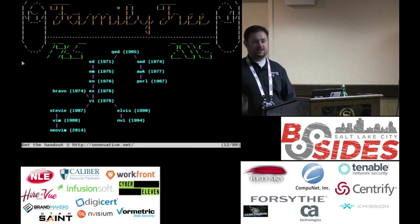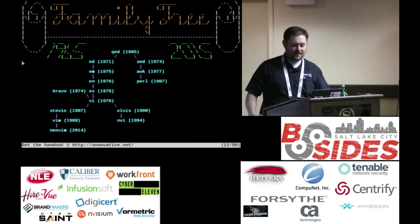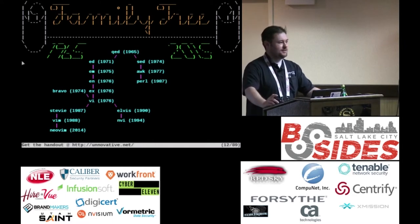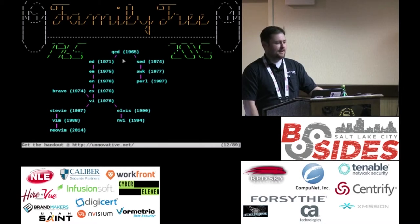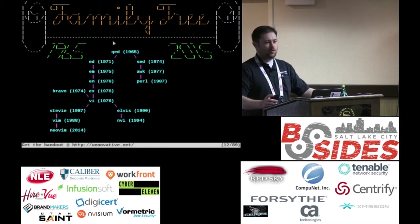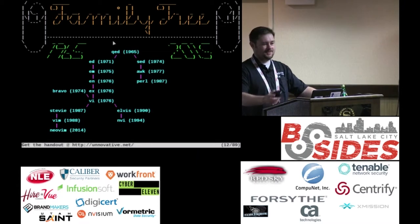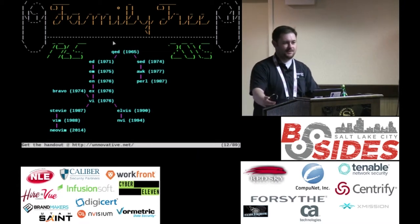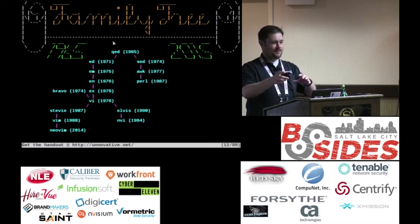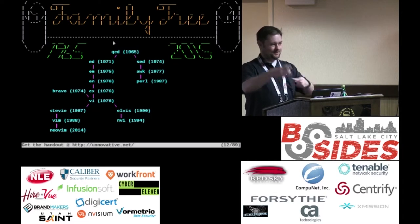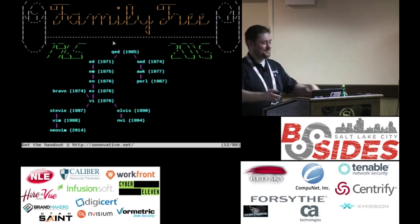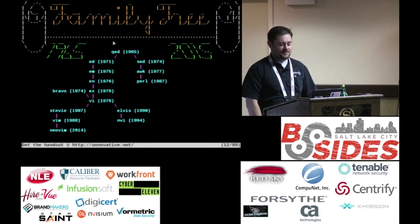Because we're in Utah, I feel obligated to have a genealogy chart to describe this. Vim has a long heritage — it descends from a line of line editors. QED was one of the first ones, and it was ported to Unix by guys like Dennis Ritchie and Ken Thompson. What QED did was compile machine code representations of the non-deterministic finite automaton when you typed a regular expression. They ported it to Unix in the 70s, and Dennis Ritchie had a hand in that.